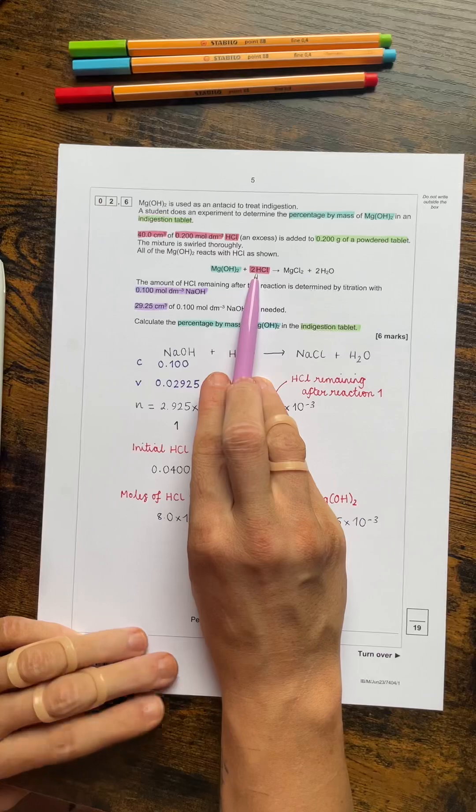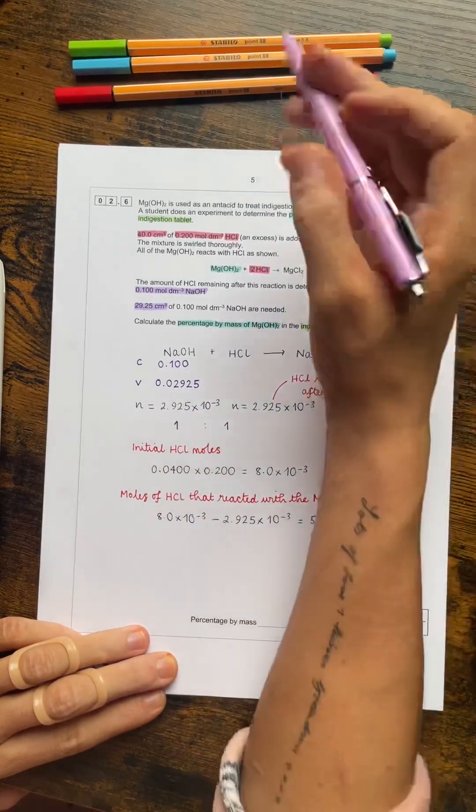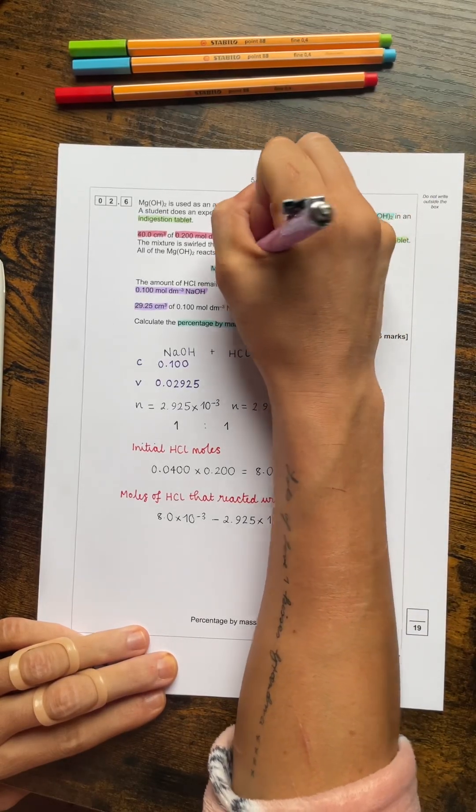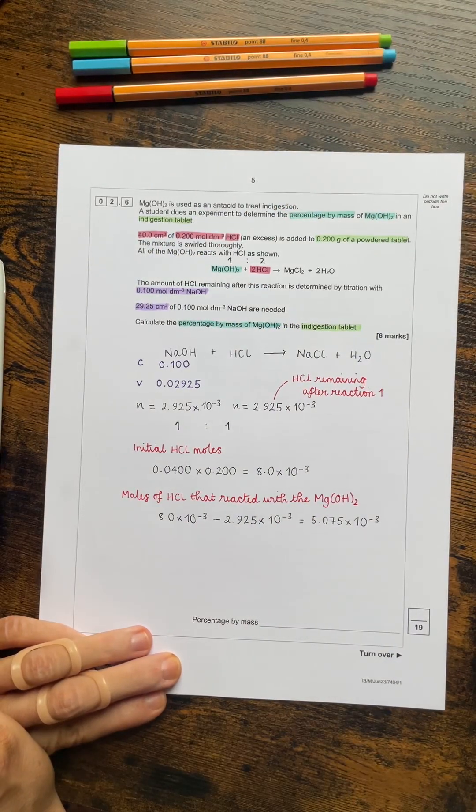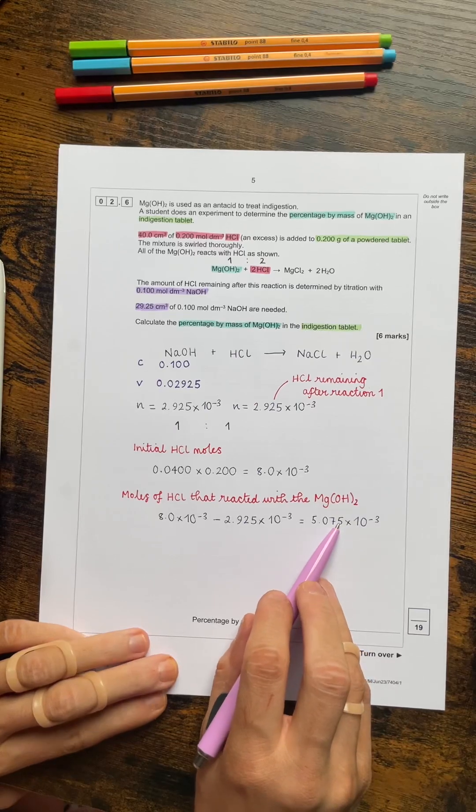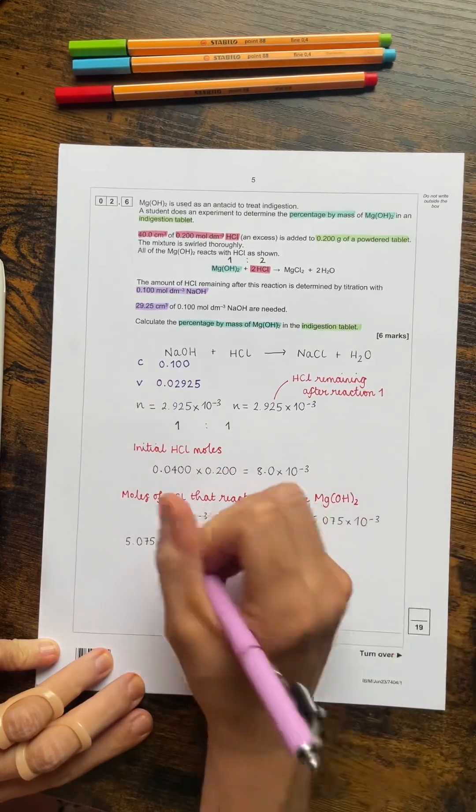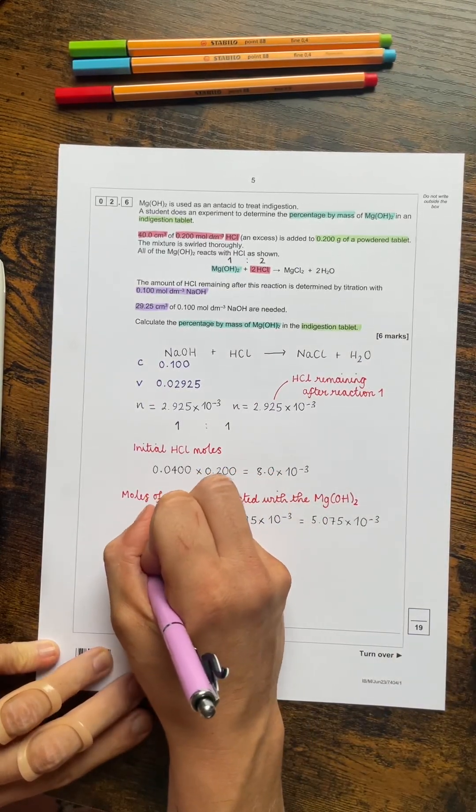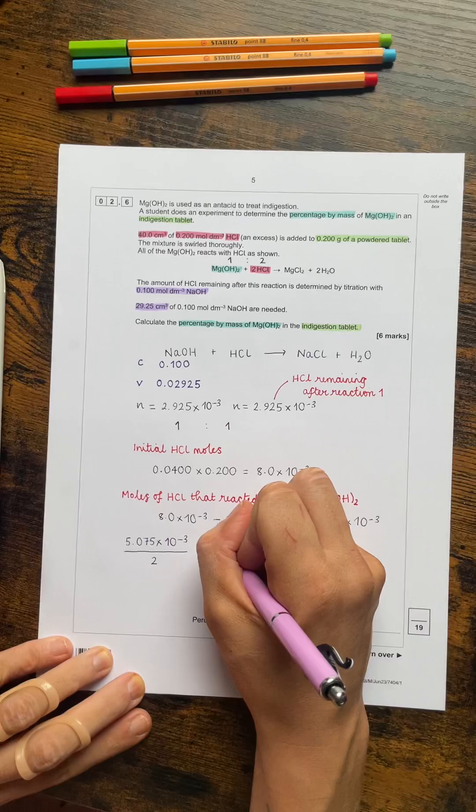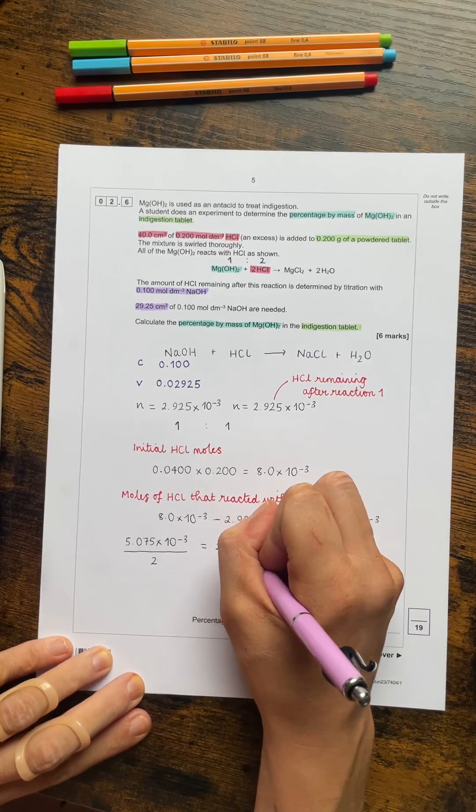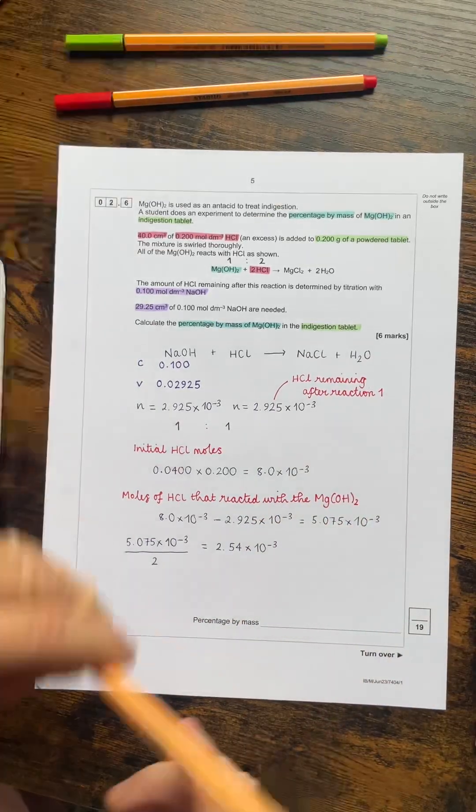Now that's the moles of the hydrochloric acid. And if we come back up to the first equation, which they did give us, we can see that the ratio of the moles here is 2 to 1. So if we then want to get the moles of the Mg(OH)2, we're going to need to half the moles that we've just worked out. So 5.075 times 10 to the minus 3 divided by 2 gives us the moles of the Mg(OH)2 which is 2.54 times 10 to the minus 3 to 3 significant figures.